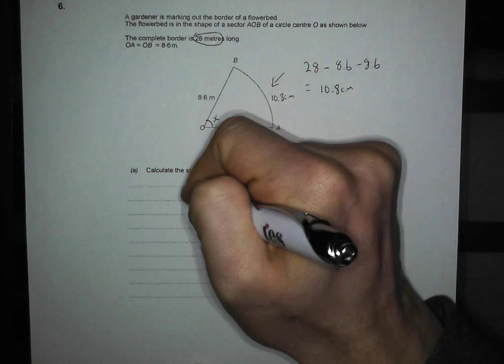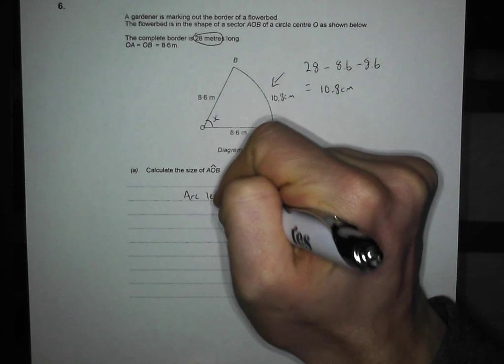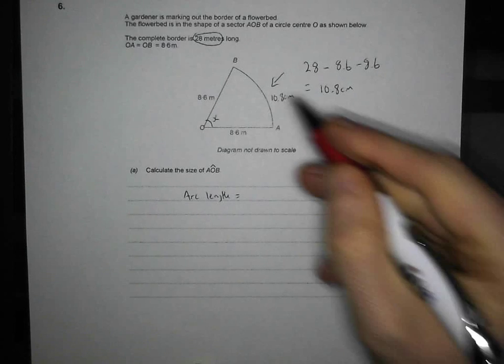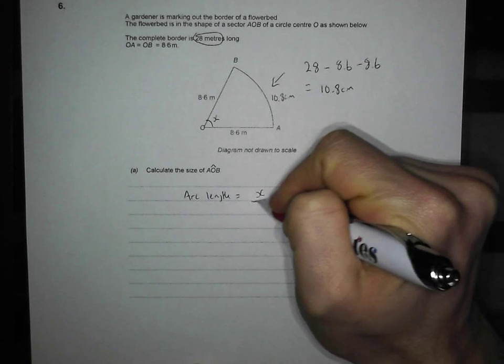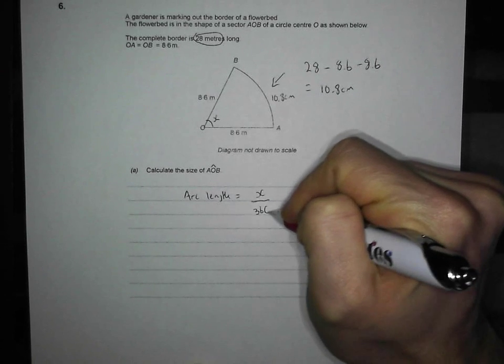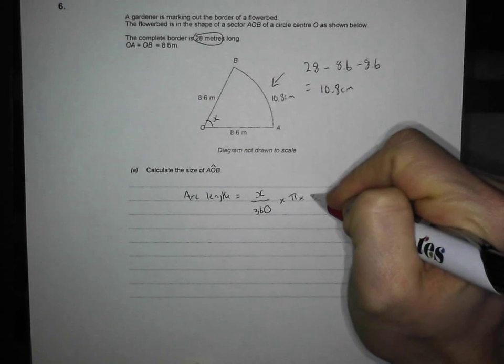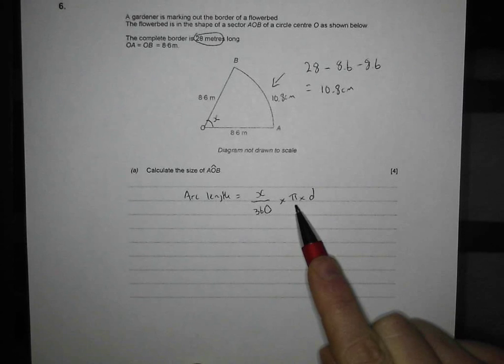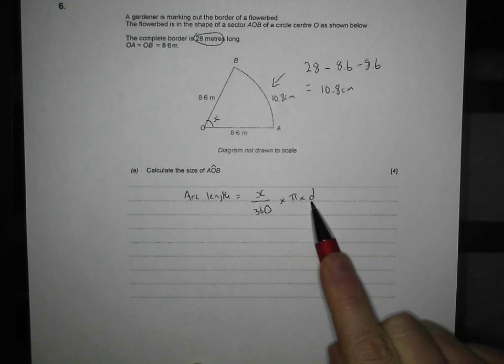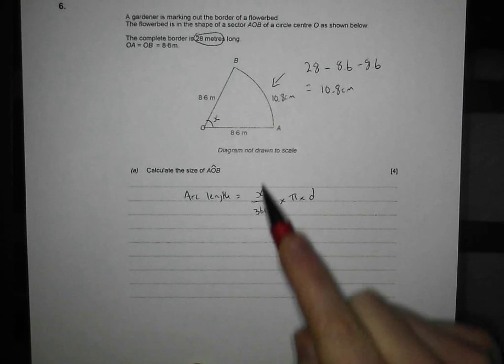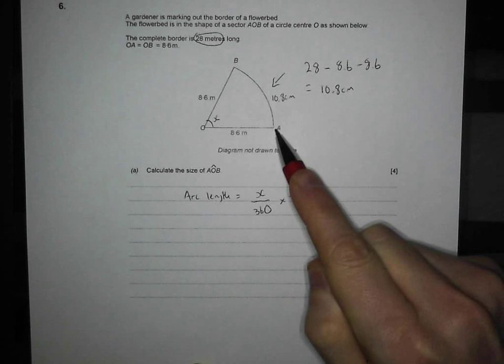So I write it down like this. Now, some people just learn the formula. But I always think if you can think of it like this, you've more chance of remembering it. So it's x over 360 times by pi times by your diameter. Pi times diameter gives you the total circumference. x over 360 gives you the portion of the circumference that you're interested in.